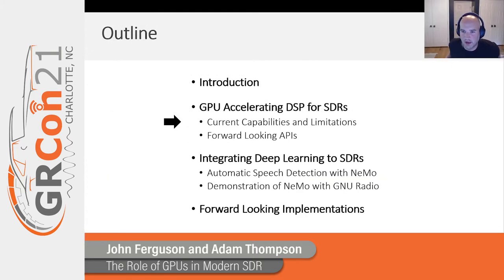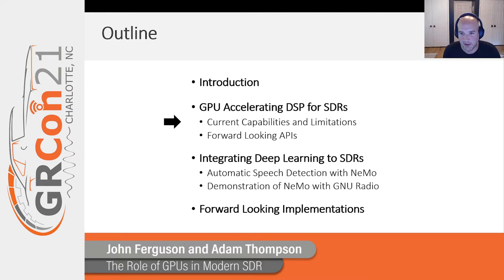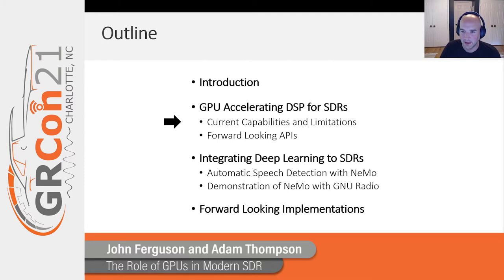One of the themes of GRCon this year is about the integration of accelerators into the workflow. As John mentioned in the introduction, one of the components and accelerators we find particularly important here are GPUs. GPUs are well positioned to do the fast signal processing we care about in this community. But also on that same device, we can tie into deep learning and machine learning frameworks like Nemo for speech-to-text translation and automatic speaker recognition tasks, or PyTorch and TensorFlow for things like modulation recognition, wireless fingerprinting, and beyond. We plan in this part of the talk to go over the current capabilities and limitations of software products targeting signal processing and its connections to the GNU Radio community, and also give some forward-leaning information about future APIs that NVIDIA are working on to push this community forward.